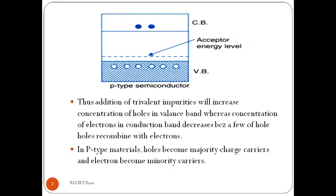In 3rd group elements, we have only three valence electrons, whereas our pure semiconductor has four electrons. Out of four, only three electrons can form covalent bonds, leaving one empty energy level, which is essentially a hole. So when we add 3rd group elements to the pure semiconductor, that empty energy level is added above the valence band, meaning holes are added in the valence band.